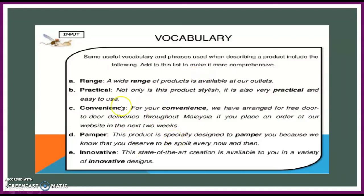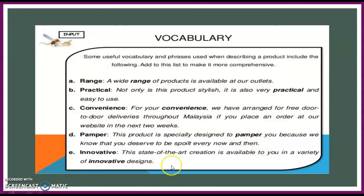Here are a few vocabulary and phrases you can use when describing your product or service. 'Range' — 'A wide range of products is available at our outlets.' 'Practical' — 'Not only is this product stylish, it's also very practical and easy to use.' 'Convenience' — 'For your convenience, we have arranged for free door-to-door delivery throughout Malaysia if you place an order at our website in the next two weeks.' 'Pamper' — 'This product is specially designed to pamper you because we know that you deserve to be spoilt every now and then.' 'Innovative' — 'This creation is available to you in a variety of innovative designs.' There are many more vocabulary words you can use for your oral presentation.